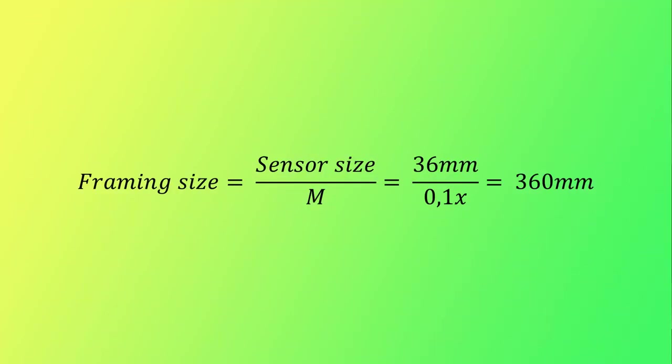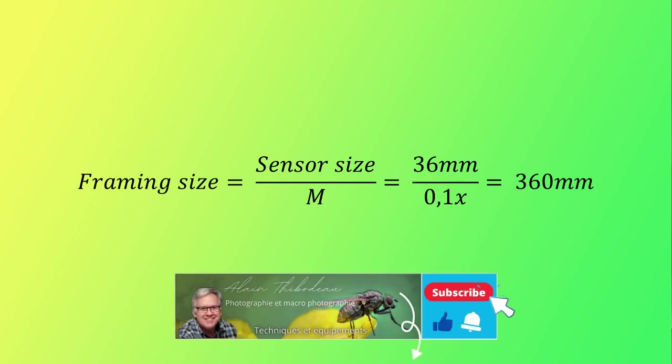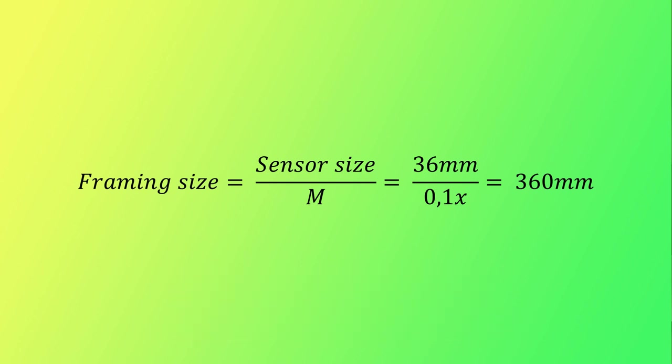For example, for the same sensor 36 mm wide, if we want a magnification of 0.1X, my frame size will be 360 mm wide. Frame size equals 36 mm divided by 0.1X, my frame size equals 360 mm.